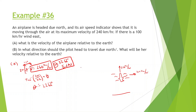Part B asks: in what direction should the pilot head to travel due north, and what will her velocity be relative to the earth? We know that even though the airplane is trying to go north, it's going to drift to the east from the wind. So we want to direct the plane in a direction that fights against the wind — angled west of north. We know the plane goes at 240 km/h maximum velocity, and the x-component must cancel the 100 km/h eastward wind, so that leg is 100 km/h.